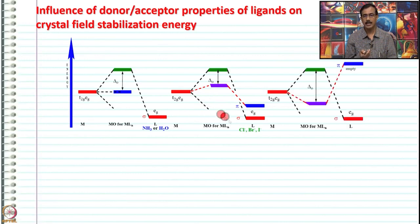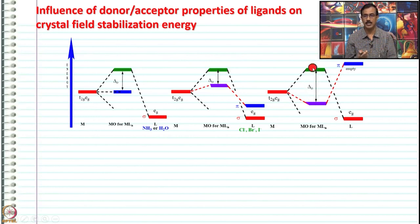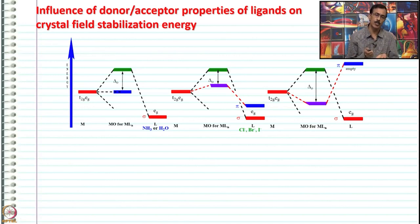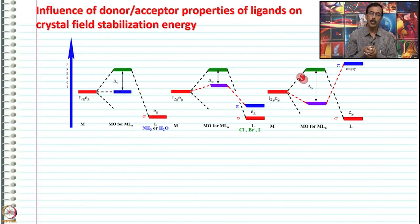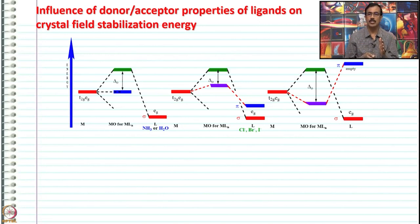The third case involves ligands with filled low-energy sigma orbitals and empty high-energy pi orbitals. When such ligands bond with the metal, the magnitude of CFSE increases. Any ligand that is a sigma donor and pi acceptor — having low-energy filled sigma orbitals and high-energy empty pi orbitals — stabilizes the complex to a greater extent, and hence they are called stronger ligands because the CFSE is larger. This is how you can classify ligands and explain why a particular ligand is called a weak or strong ligand.